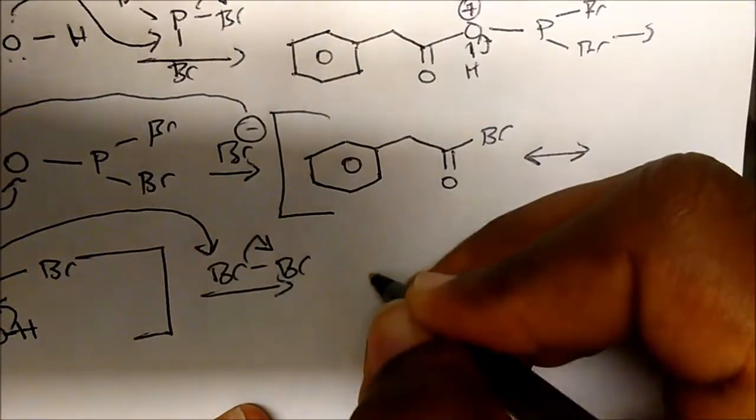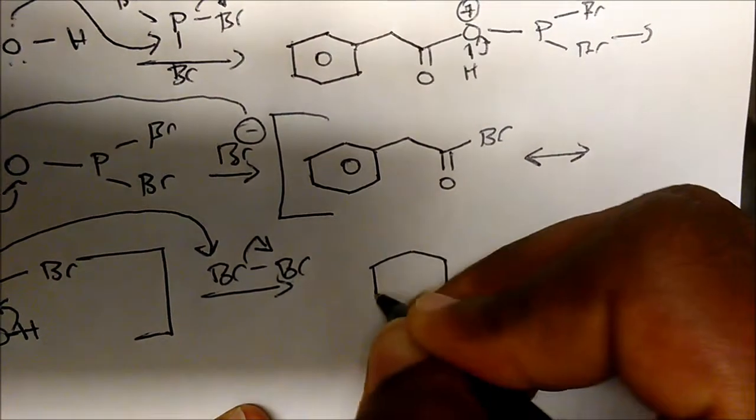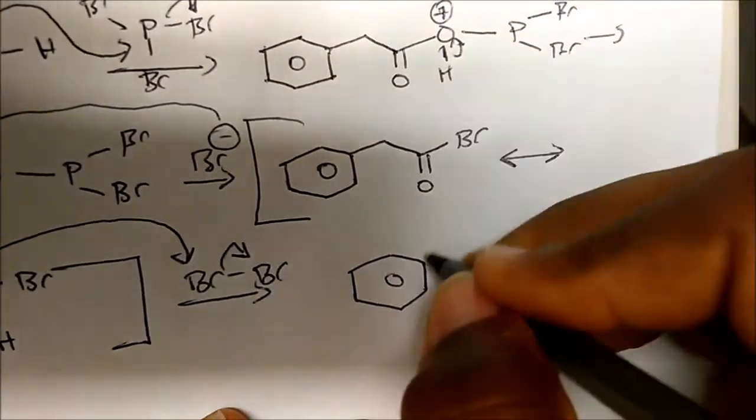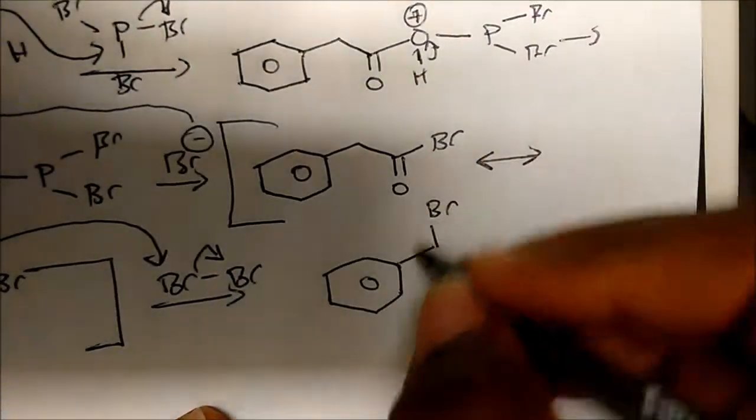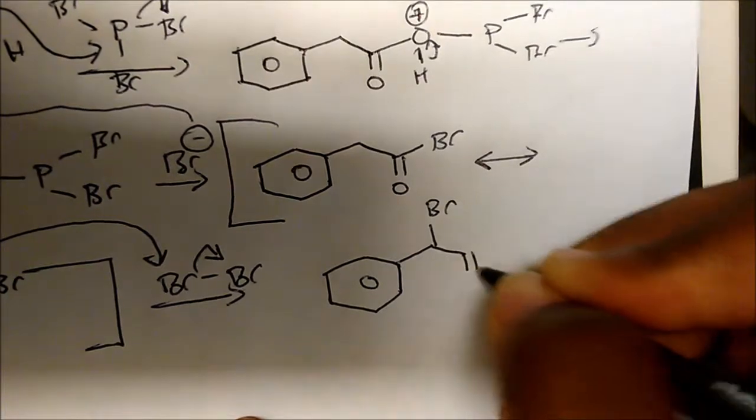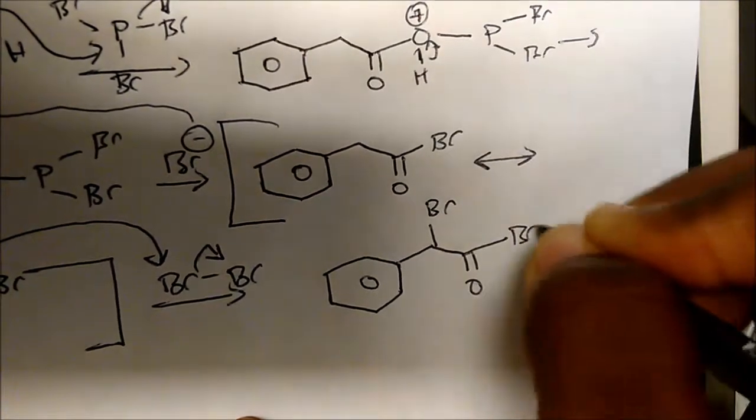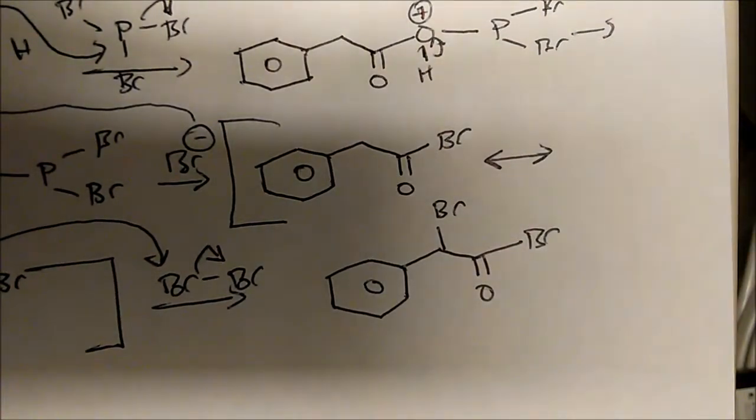We'll actually create this molecule. So there's your benzene ring, there's your bromine that will be added on right there, on the benzylic carbon. There's our ketone and there's our other bromine.